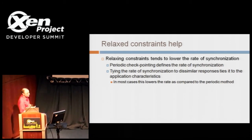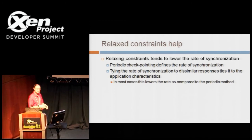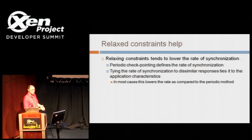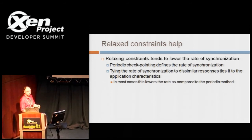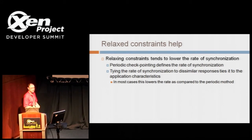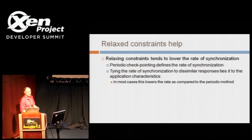This actually ties the synchronization to the application itself or the characteristics of the application. If you have an application that tends to make its output vary more, then you'll see more updates and synchronizations. When the application's output is more consistent, you see very few. In most cases, we find that this relaxation does lower the number of synchronizations required, so the overhead is lower than the Remus case — but not in every case.